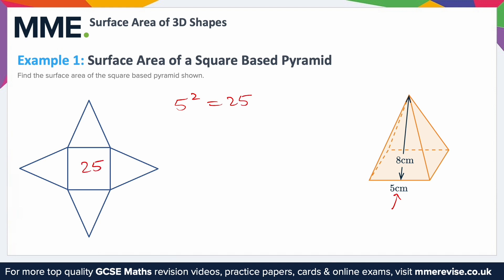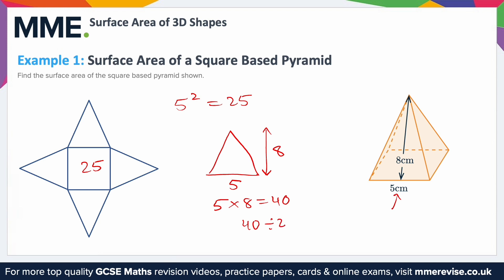The triangle is a little bit harder, but still not too bad. We know that it's 5 wide and 8 tall because that's labelled on the diagram. 5 times 8 is 40, but remember when you're working out a triangle, you have to halve it. So 40 divided by 2 is 20. The area of one triangle is 20, and since they're all the same, they're all 20.